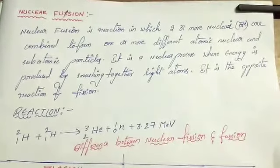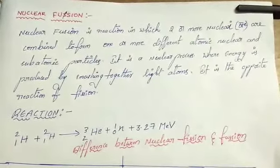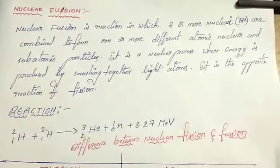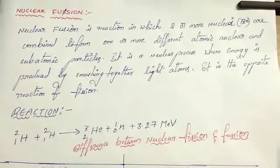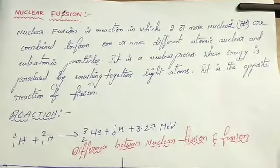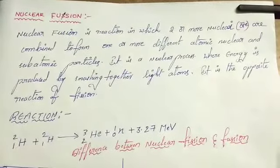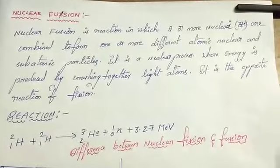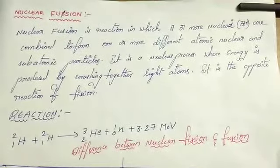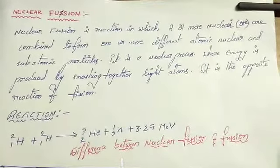The two protons within the sun fuse. Most of the time the pair breaks apart again, but sometimes one of the protons transforms into a neutron via the weak nuclear force. A third proton then collides with the formed deuterium. Two helium-3 nuclei create a helium-4 nucleus plus two extra protons. In nuclear fusion, we can get energy when two atoms join together to form one.